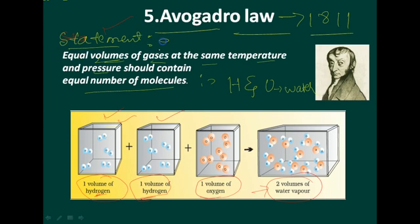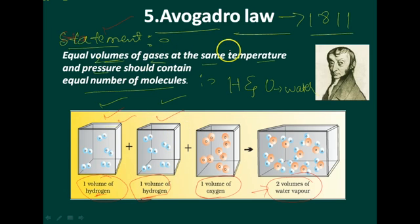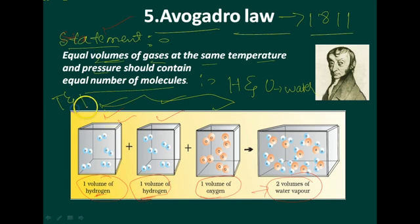The statement of Avogadro's Law: equal volumes of gases — for instance, one volume of hydrogen and one volume of hydrogen (two volumes total), along with one volume of oxygen — kept at the same temperature and pressure, should contain equal number of molecules.